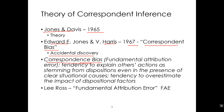The correspondent bias is the tendency to explain others' actions as stemming from dispositions, even in the presence of clear situational causes — the tendency to overestimate the impact of dispositional factors. It's a tendency, so it's something that people prefer to do, to explain other people's actions — that's just another word for attribution.